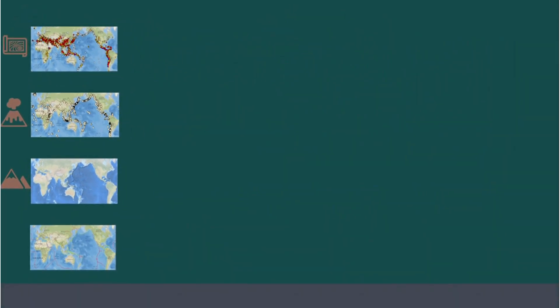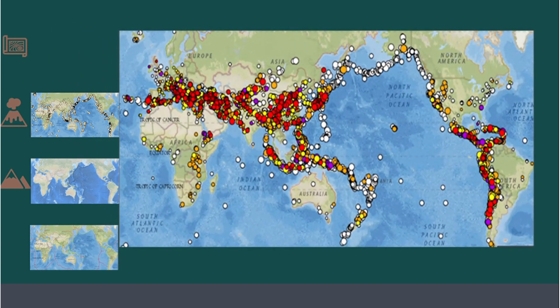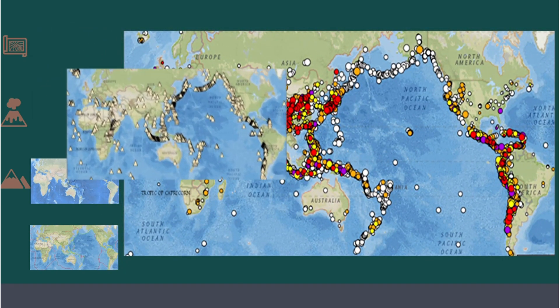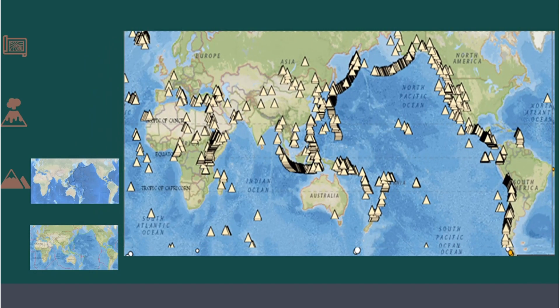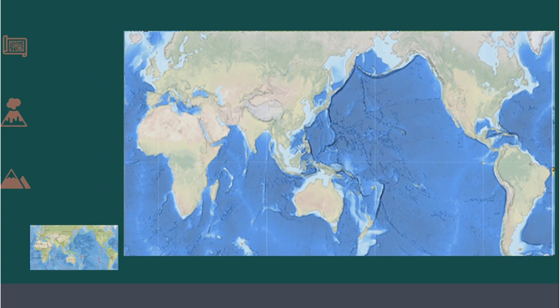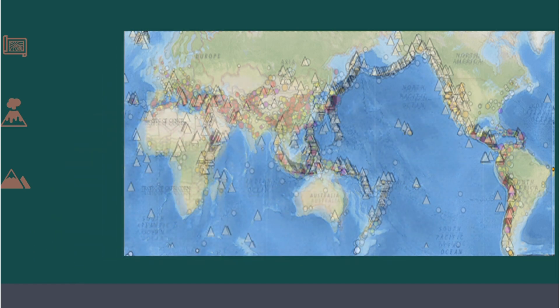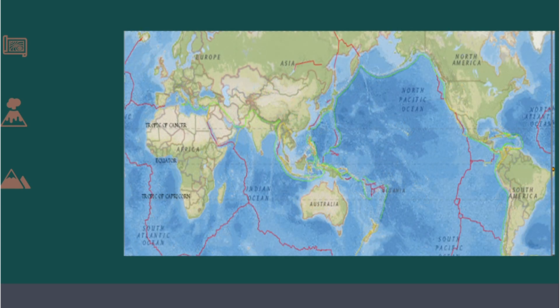If we put the pictures on top of each other — the earthquake epicenters, the active volcanoes, and the mountain ranges — there will be patterns formed. We can see that earthquake epicenters, active volcanoes, and mountain ranges are not scattered. They are found at certain locations, which are the plate boundaries.